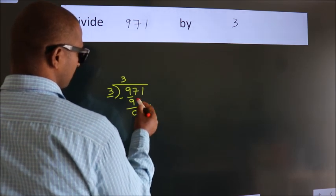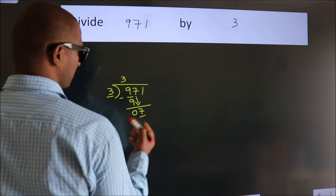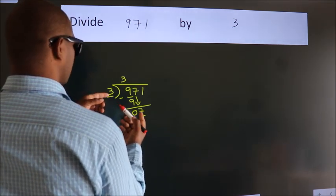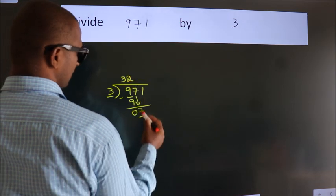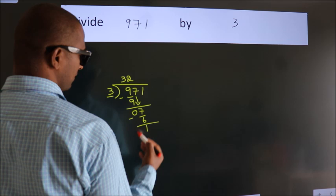After this, bring down the beside number. So 7 down, so 7. A number close to 7 in the 3 table is 3 times 2 is 6. Now we subtract. We get 1.